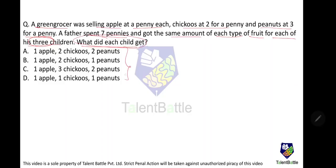The options given are: each child gets one apple, two chikus, two peanuts; or one apple, two chikus, one peanut, and so on. Let us find out the total number of fruits. We'll solve it using options because it is quicker and easier.